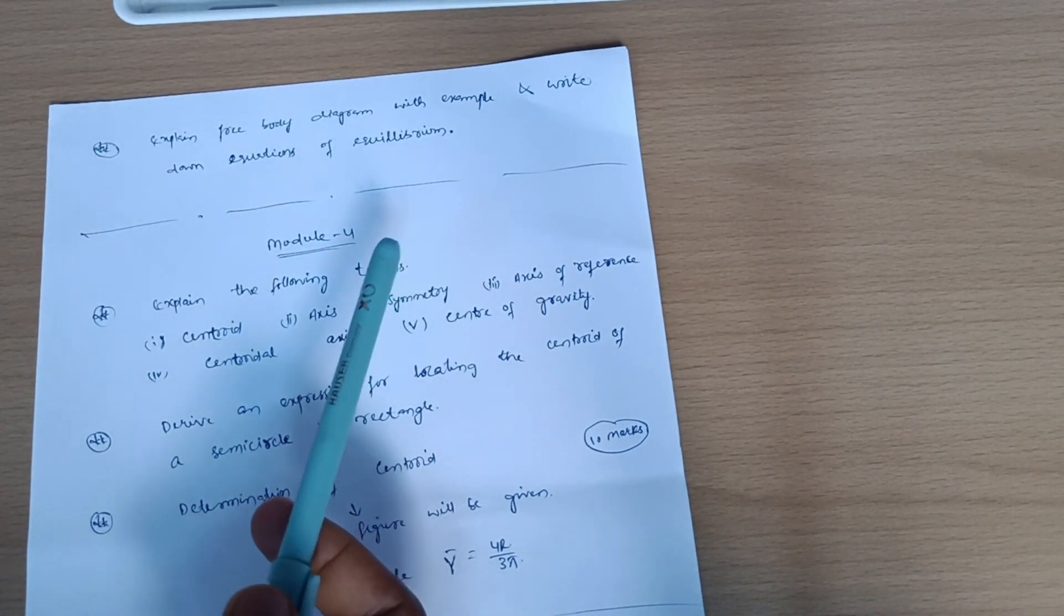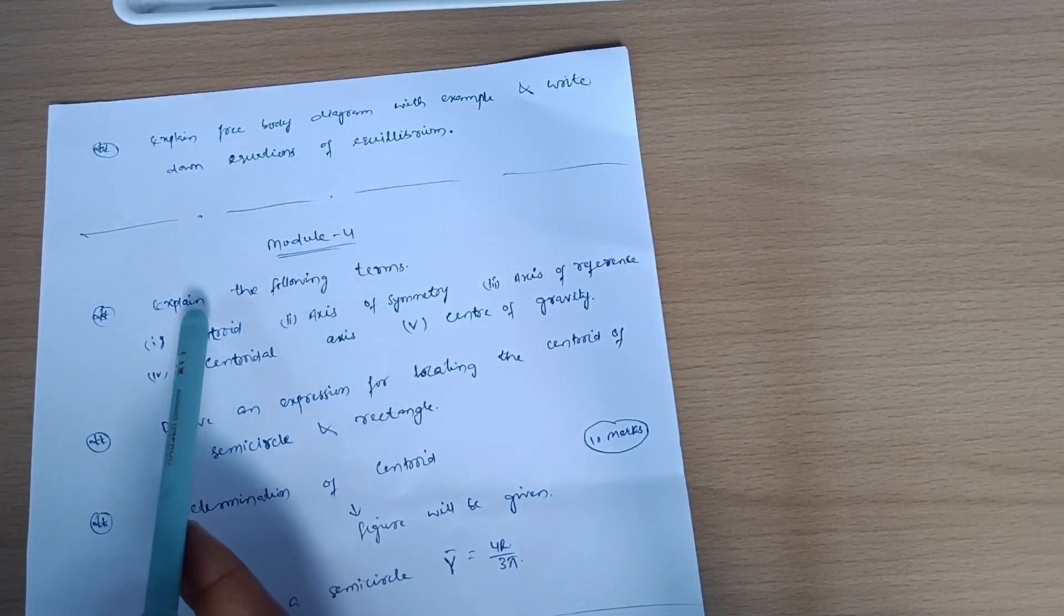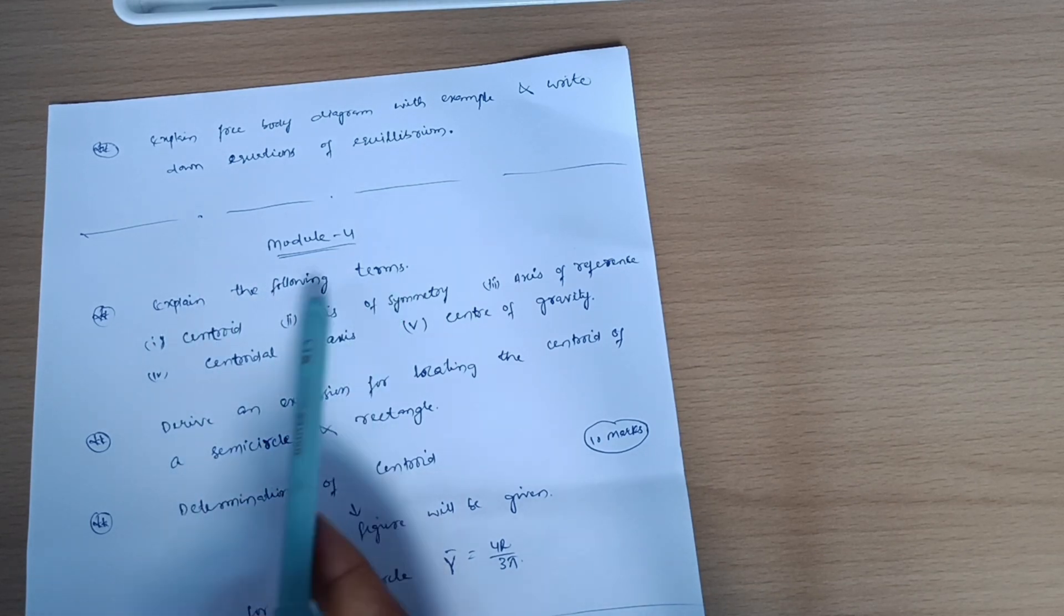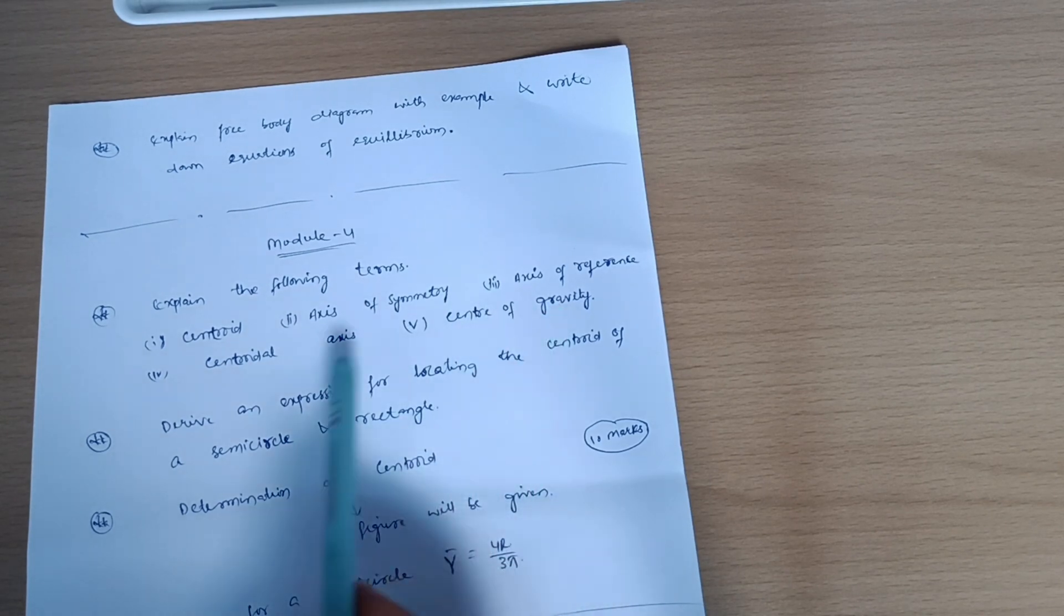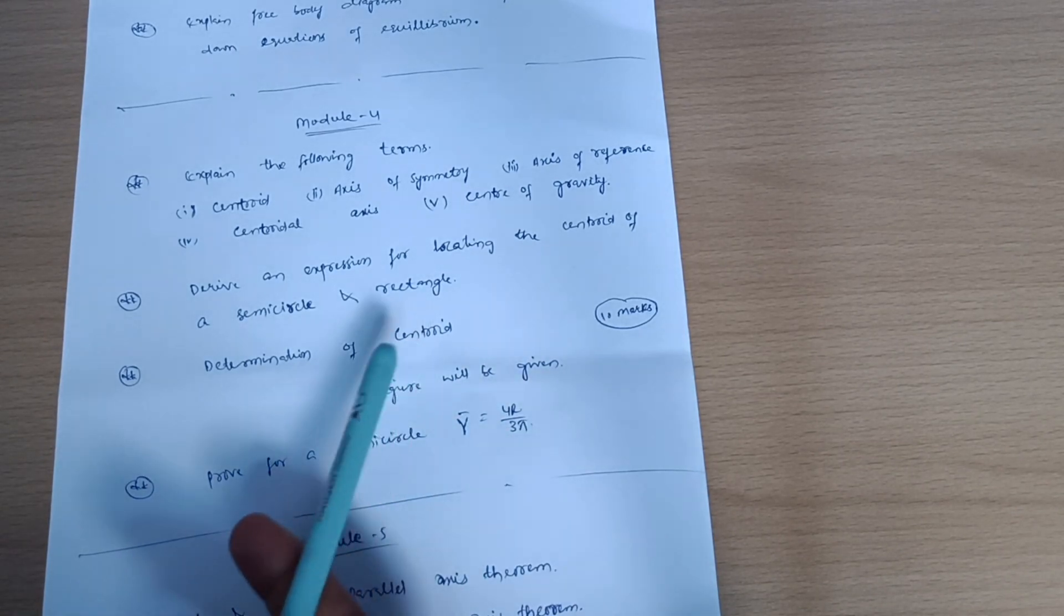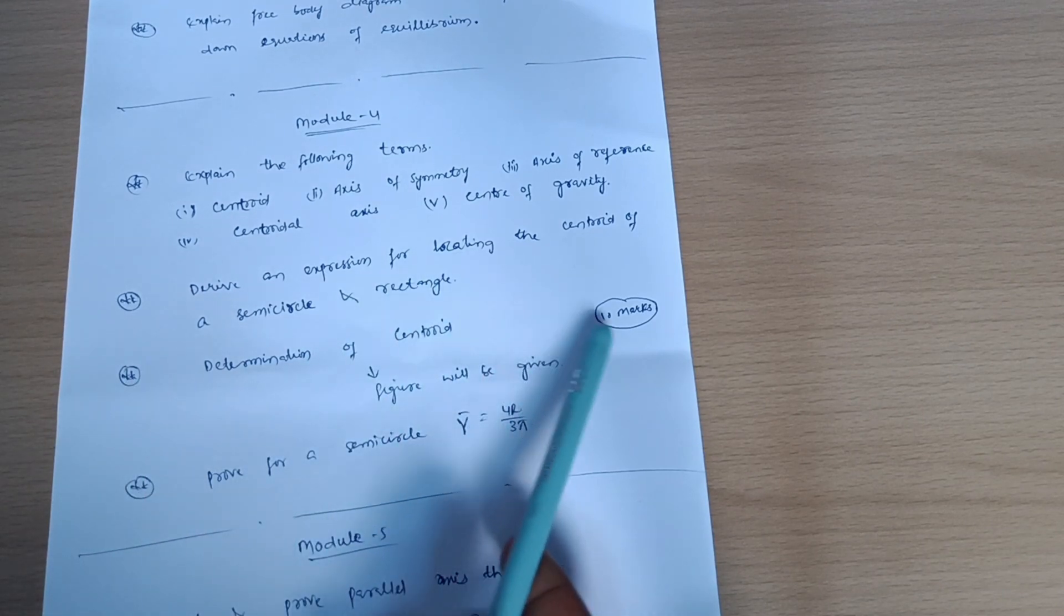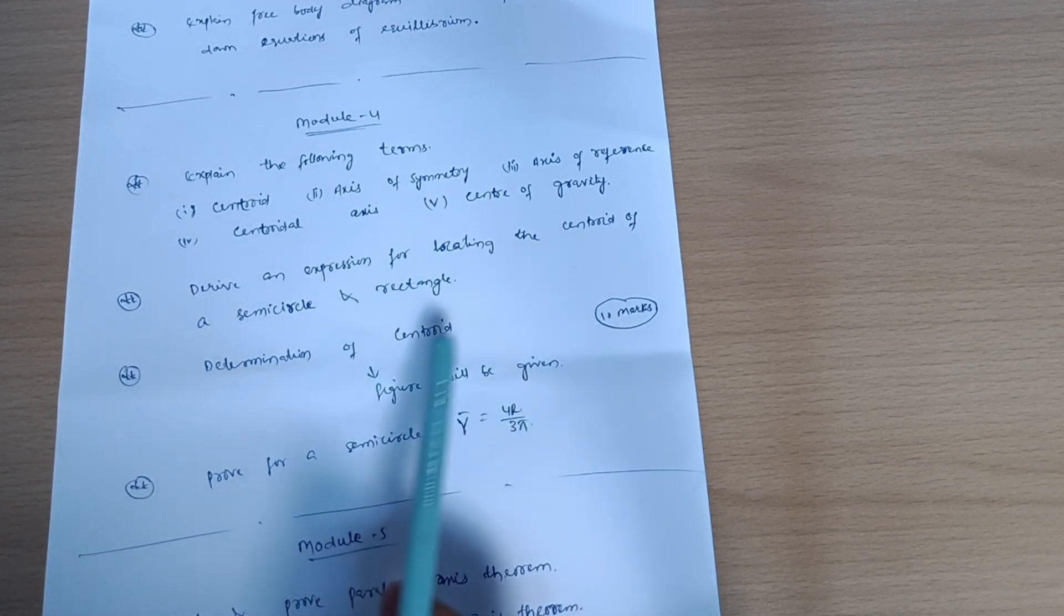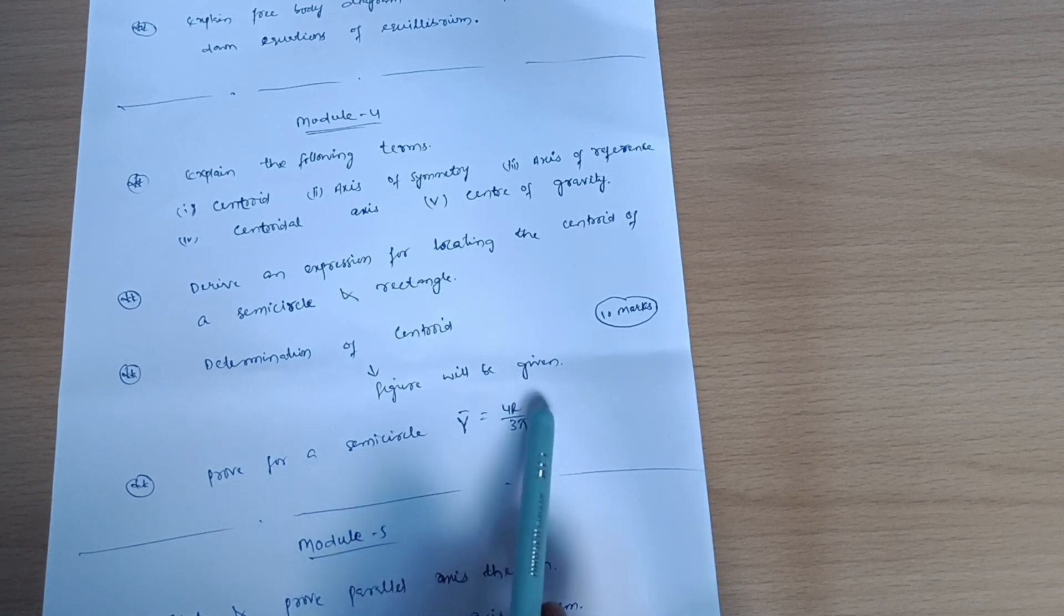Model fourth - it is problematic module, centroid problems are there but still there are some theoretical concepts. Explain the following terms: centroid, axis of symmetry, axis of reference, centroidal axis and center of gravity. Derive an expression for locating the centroid of a semicircle and a rectangle and determination of centroid problems. This may be 10 marks or sometimes 12 marks from the centroid part. Prove for a semicircle y bar equals 4r by 3 pi.